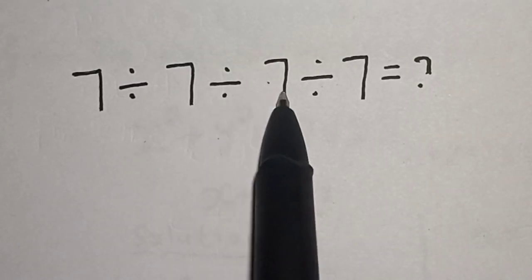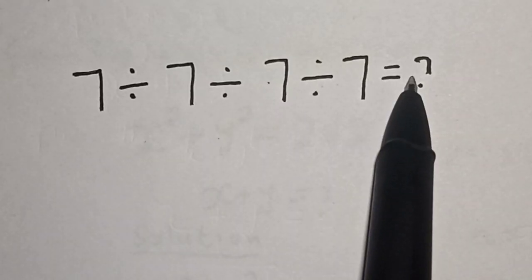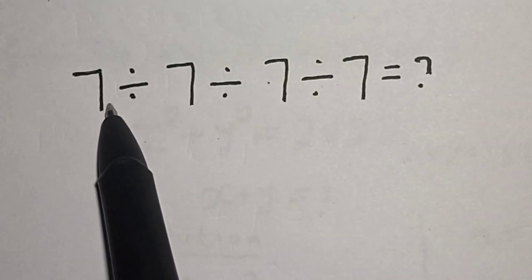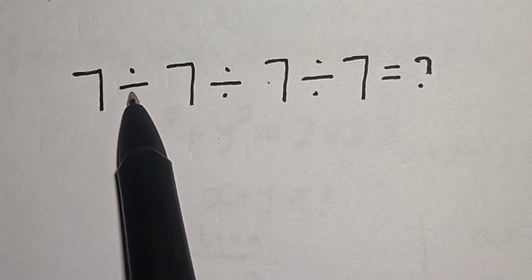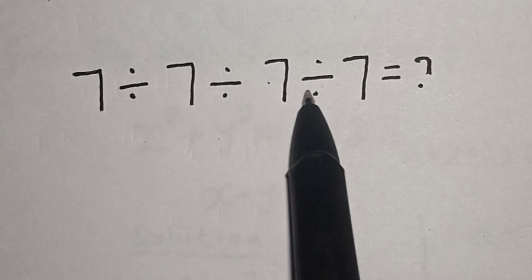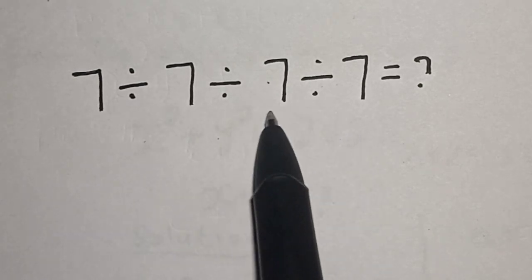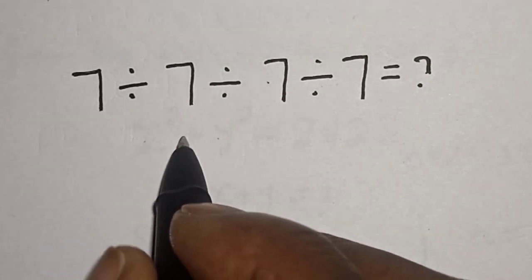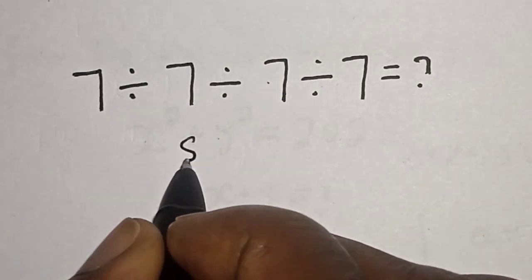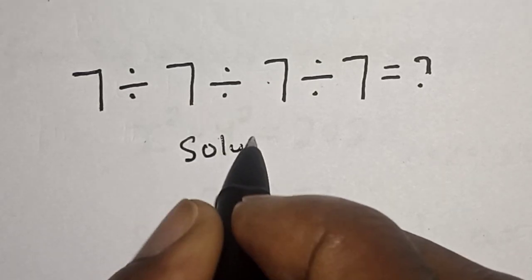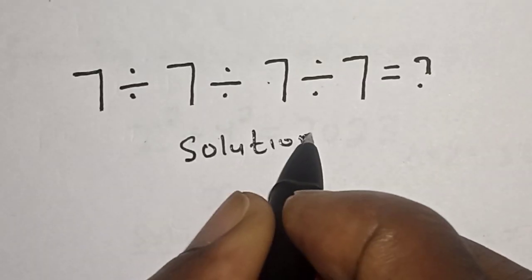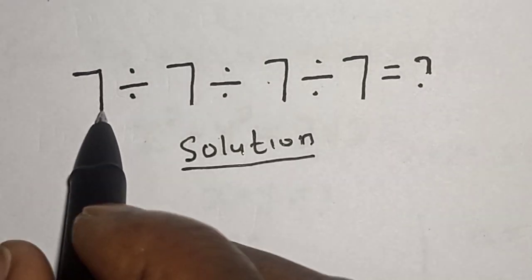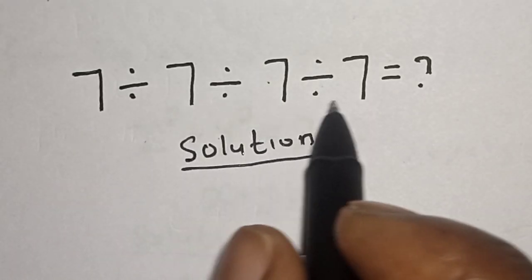Seven divided by seven divided by seven divided by seven is equal to what? Hi everyone, welcome to my class. In this class we quickly want to evaluate this problem: seven divided by seven divided by seven divided by seven.